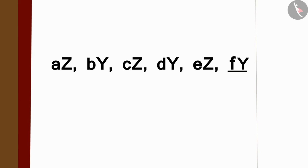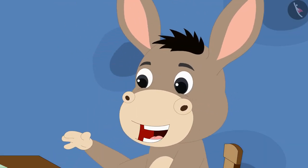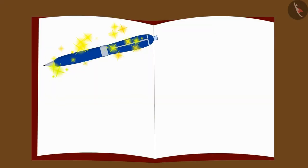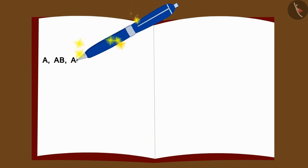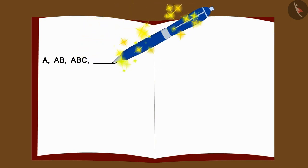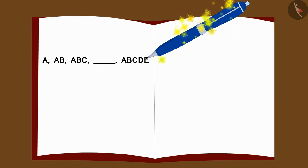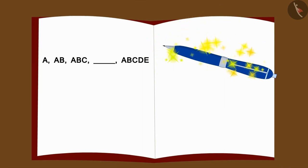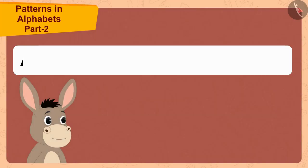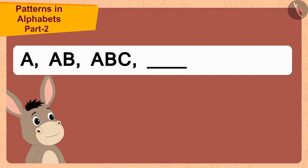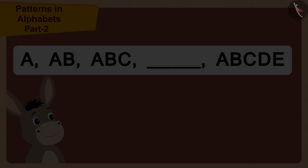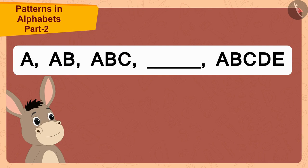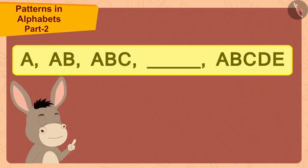Now once again the magical pen started writing itself. This time the pen has written such a pattern. Bola was shocked. He could not understand the rule of this pattern.